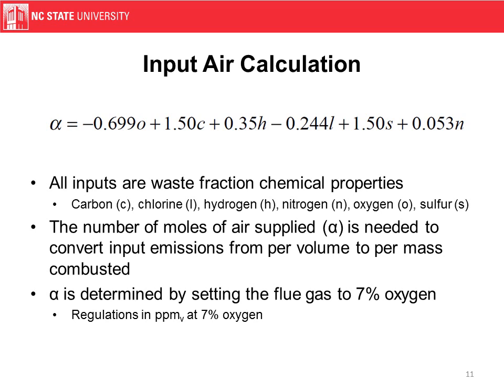One of the first calculations we need to do is calculate how much air our system requires to combust the waste. This allows us to effectively and accurately estimate emissions. In this equation, we're calculating the number of moles of air supplied, noted by alpha on the left, using an empirical equation that utilizes the carbon, chlorine, hydrogen, nitrogen, oxygen, and sulfur contents of the waste. This input air composition is then used to set the flue gas to 7% oxygen, based on the fact that waste-to-energy regulations are almost always in parts-per-million volume at 7% oxygen.